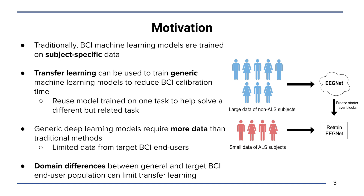Deep learning models require large amounts of data for training. However, there are limited BCI data available from target BCI end-users, such as individuals with ALS. While a large amount of BCI data from the general population are available for transfer learning, cross-domain differences limit knowledge transfer between populations.